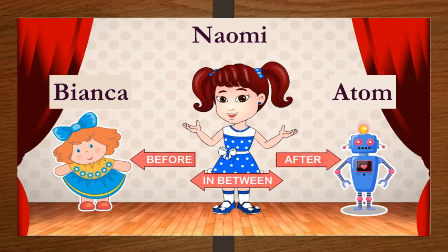Bianca is standing before Atom. Atom is standing after Naomi. Naomi stands in between Bianca and Atom.